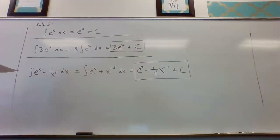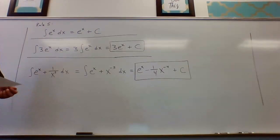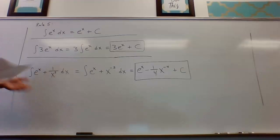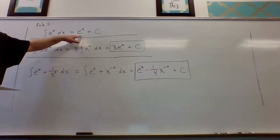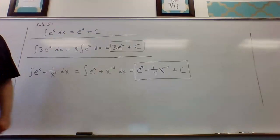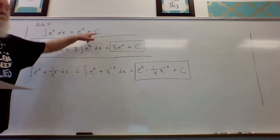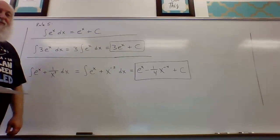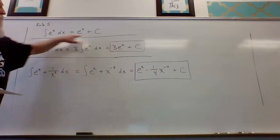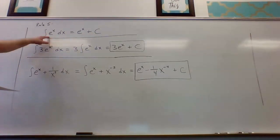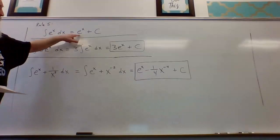Rule number five has to do with the antiderivative of the natural exponential function. From our basic rules of differentiation, the derivative of e to the x is just e to the x. The antiderivative of e to the x with respect to x is also e to the x, plus the arbitrary constant c, because the derivative of any constant is zero.